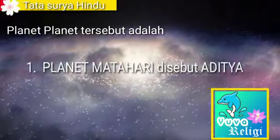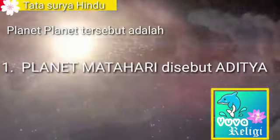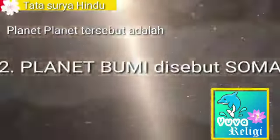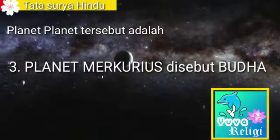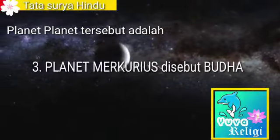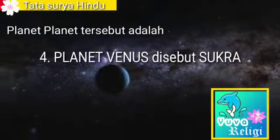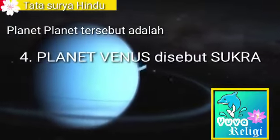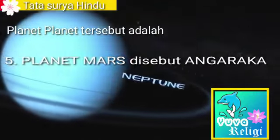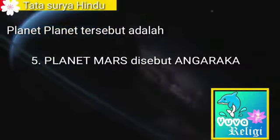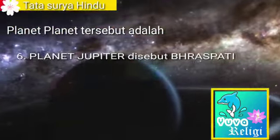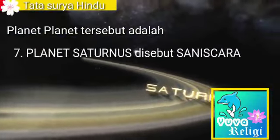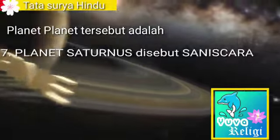Planet-planet tersebut adalah: planet Matahari disebut Aditya, planet Bumi disebut Soma, planet Merkurius disebut Buddha, planet Venus disebut Sukra, planet Mars disebut Anggaraka, planet Jupiter disebut Braspati, dan planet Saturnus disebut Sanisca.